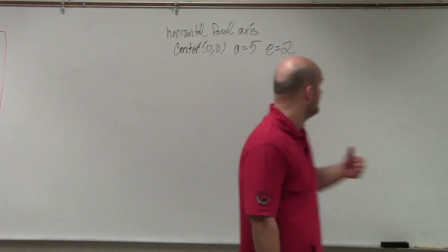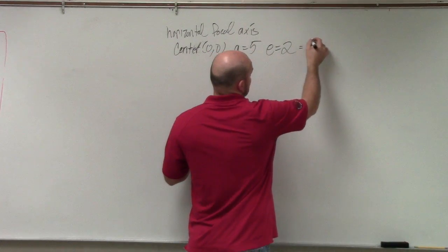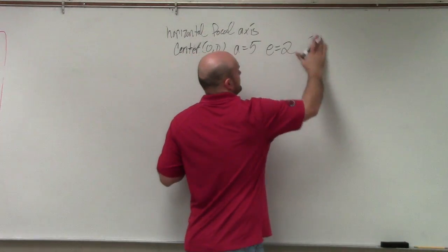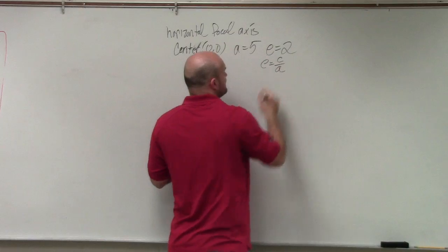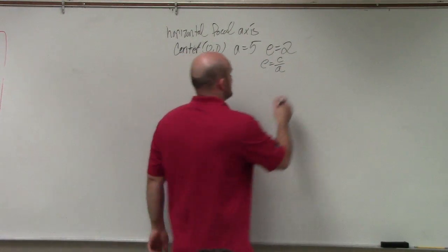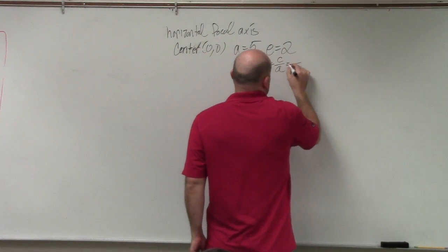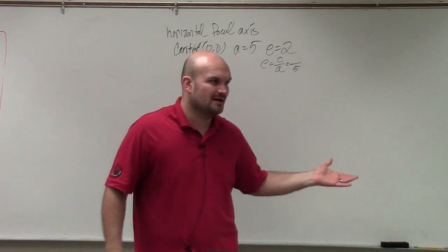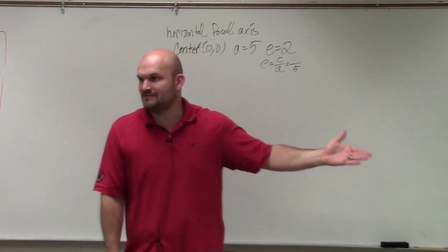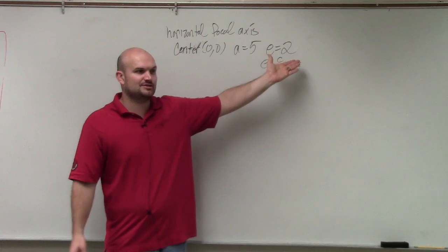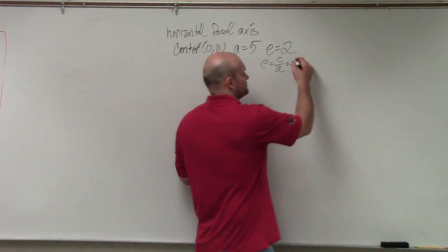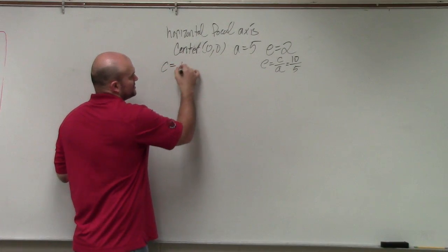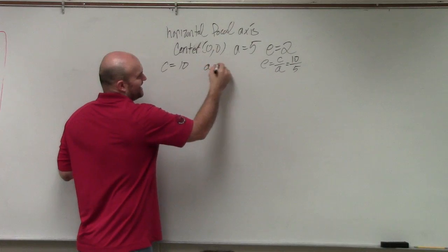When we're talking about eccentricity, that is equal to c over a. Now, in this case, eccentricity is c over a. We already know a is 5. So what usually comes a problem with this is when people aren't paying attention, they have a hard time really understanding and saying, all right, well, the eccentricity is 2 and a is 5. How do we get 2 if 5 is in the denominator? That's weird. What number do I have to have in my numerator that's going to make that 2? 10.